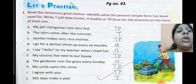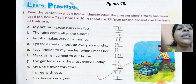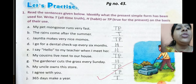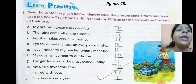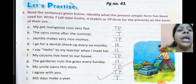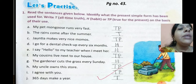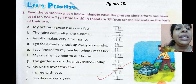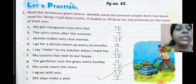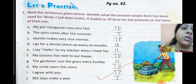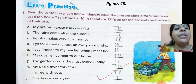Number C: 'John Shea makes very nice momos.' True for the present — write TP. Number D: 'I go for a dental checkup every 6 months.' That is a habit — write H. Number E: 'I say hello to my teacher when I meet her.' That is also a habit — write H. Number F.